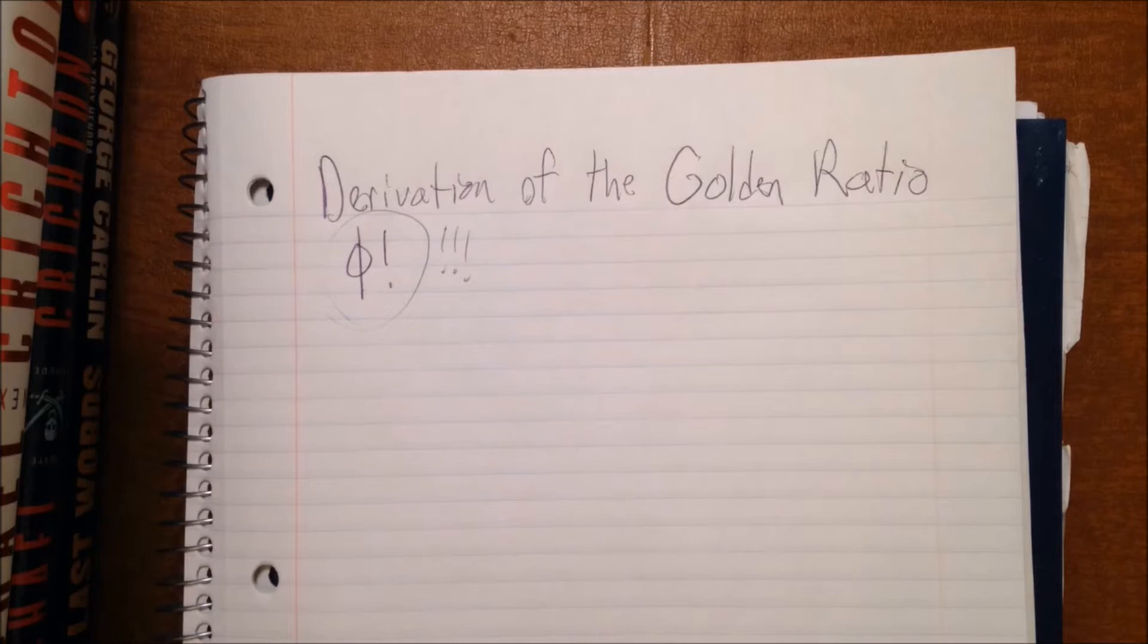Now one of the ways we can get the value of phi is by taking the limit of the ratio of successive terms in the Fibonacci sequence. Now if you don't know what that means, don't worry because I'm about to show it to you right here on paper.